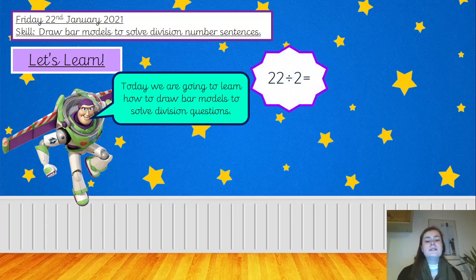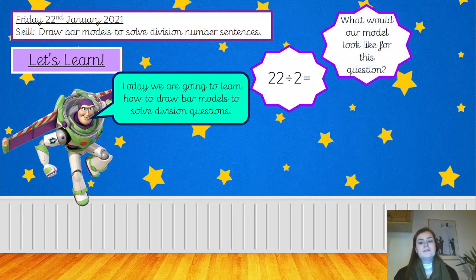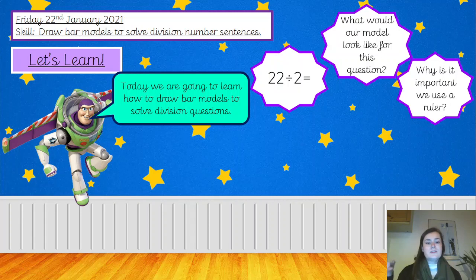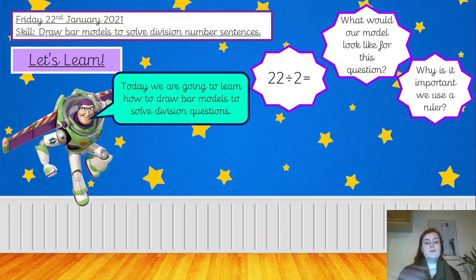22 divided by 2 is going to be our first number sentence today. You don't need to write anything down, but just have a little think — what would our bar model look like for this question? And why is it important that we use a ruler? You can pause the video and answer those two questions now. Hopefully you said our bar model will have 22 at the top — that's our total — and the bottom bar will be split into two sections. It's really important that we use a ruler so that all of the lines in our bar model are straight and equal.